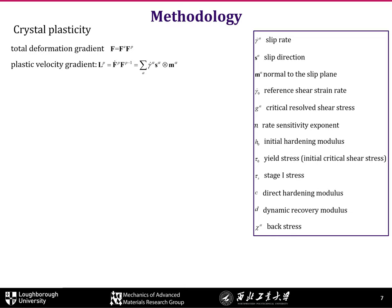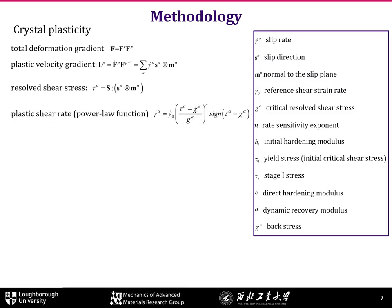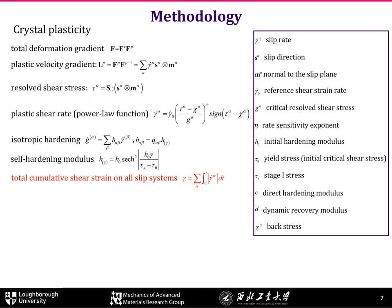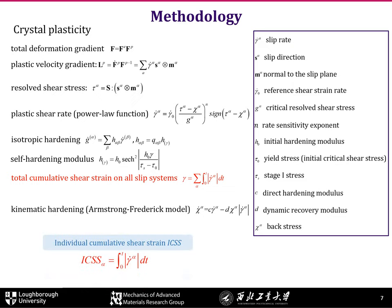Crystal plasticity describes deformation at a crystal level. The main points of this well-established theory are as follows. The total deformation tensor is decomposed into elastic and plastic parts, and the plastic velocity gradient is defined as the summation of resolved shear strain rate of each slip system. The resolved shear stress on the slip system is obtained from the PK-1 stress, and the shear strain rate follows a power-law function. Hyperbolic isotropic hardening and the Armstrong kinematic hardening model are used. We used the individual cumulative shear strain of each slip system as a damage indicator to study the activity of each slip system.